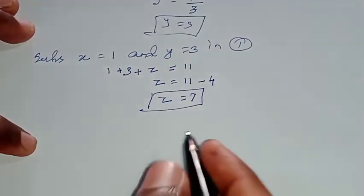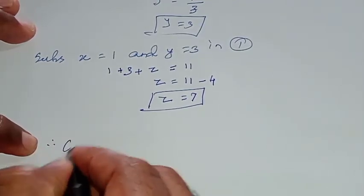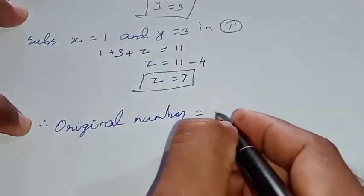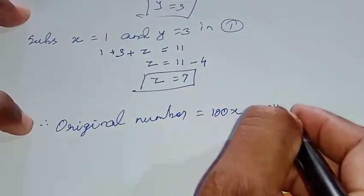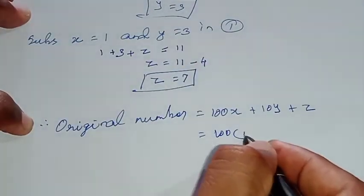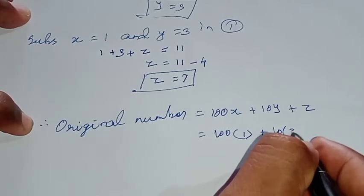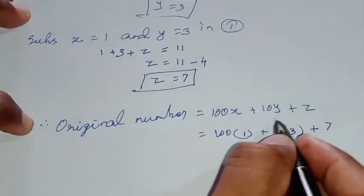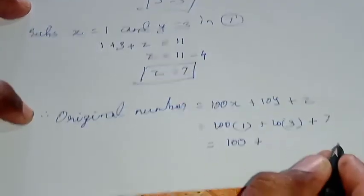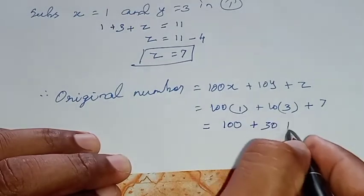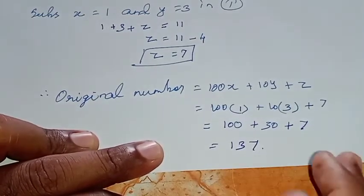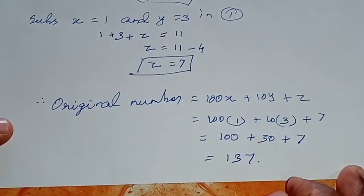We have found all values: x equals 1, y equals 3, z equals 7. Therefore, the required original number equals 100x plus 10y plus z, which is 100 into 1 plus 10 into 3 plus 7, giving 100 plus 30 plus 7. So the required number is 137. That's all. Thank you.